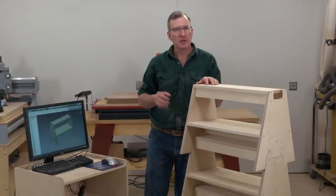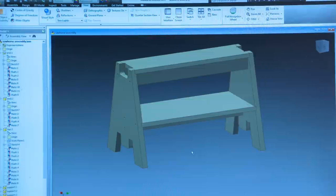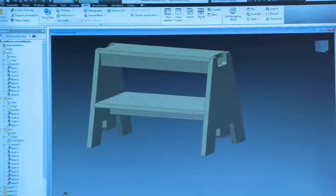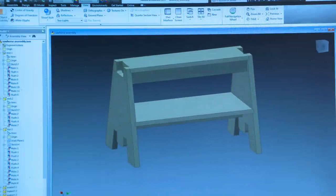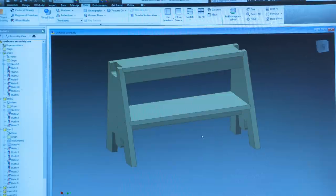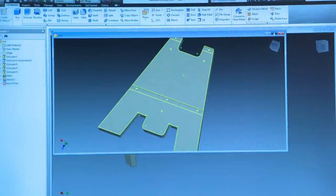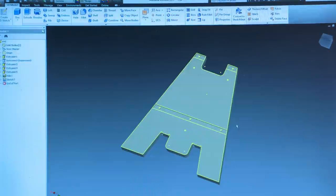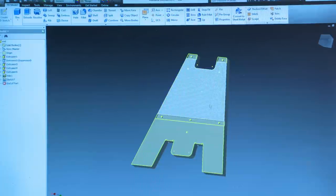To create our saw horse project, I'm using a 3D CAD program called Autodesk Inventor. Autodesk Inventor allows me to create individual parts, bring them into an assembly, and then constrain them together to represent the final project. To create the DXF files that we will need to then create the G-code, I need to open an individual part. In this case, this is the end of the saw horse.